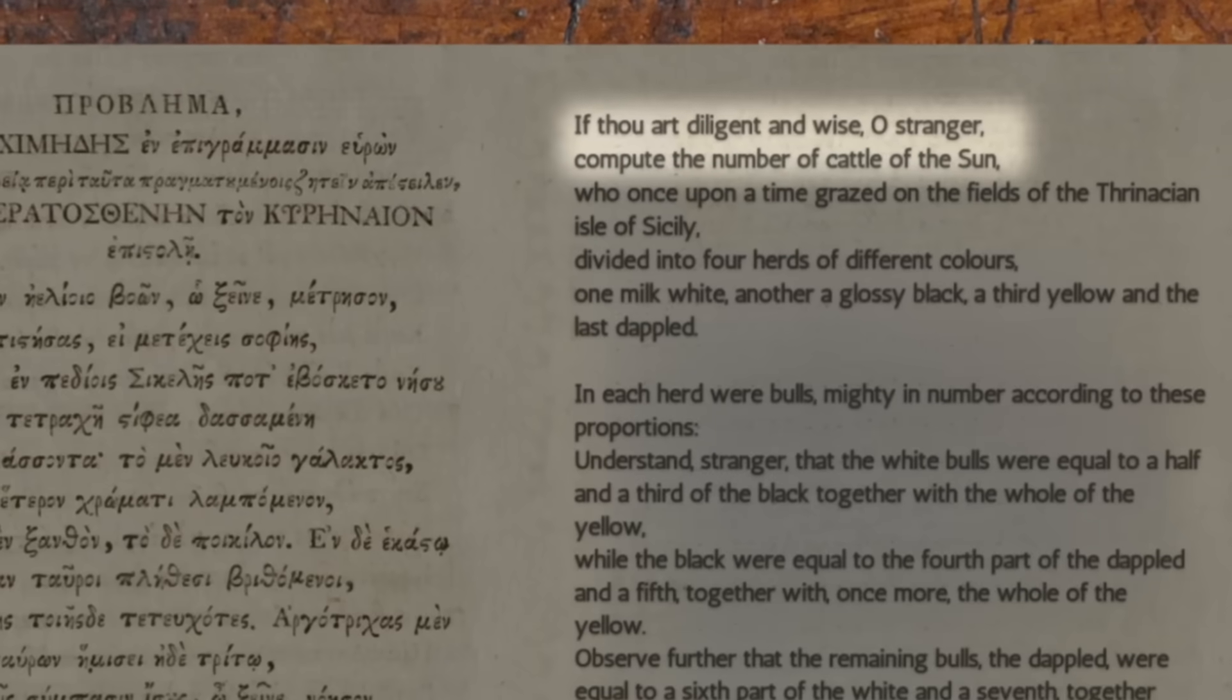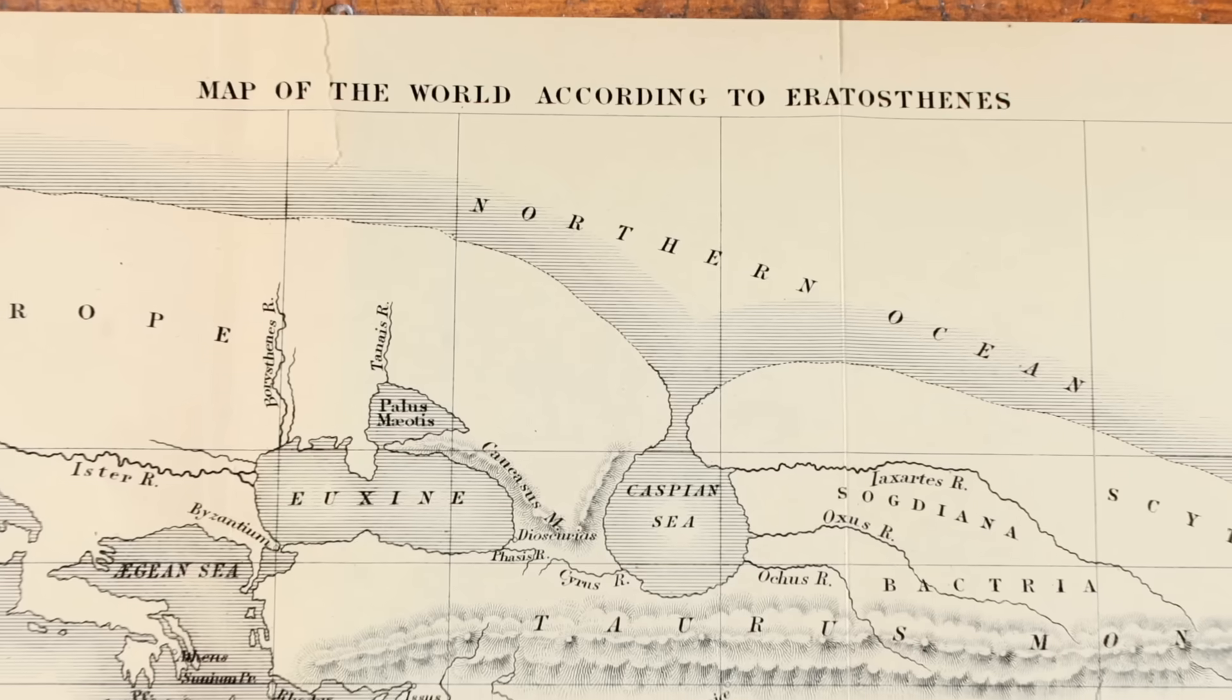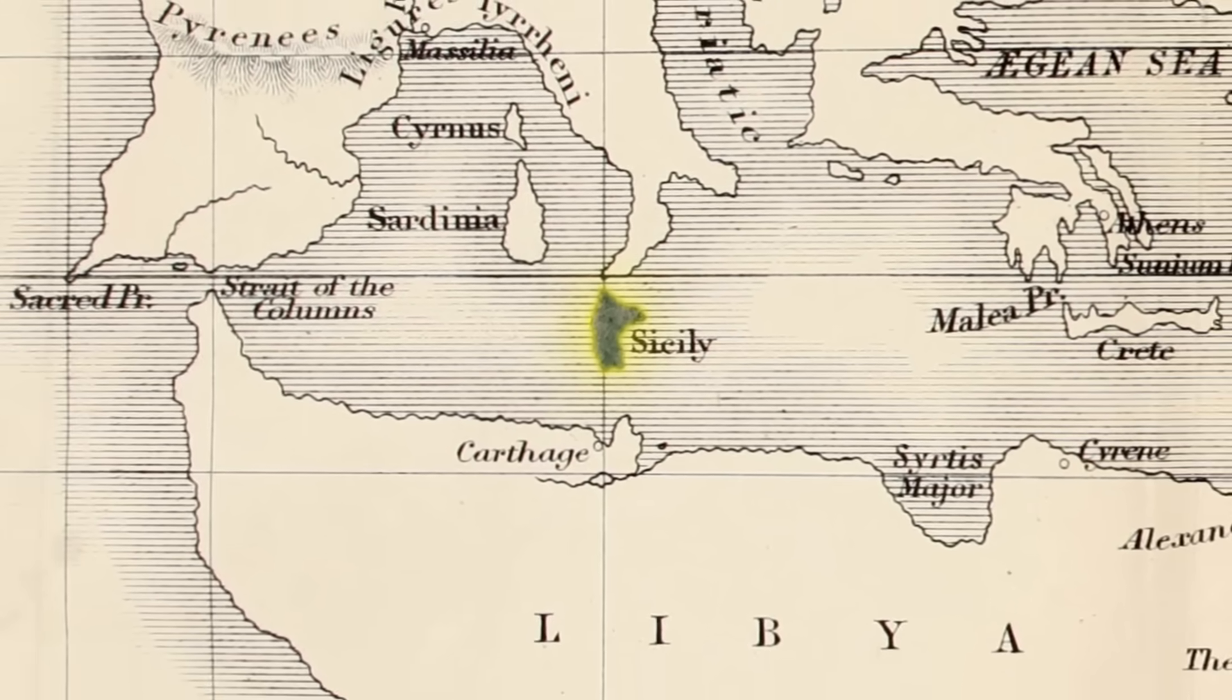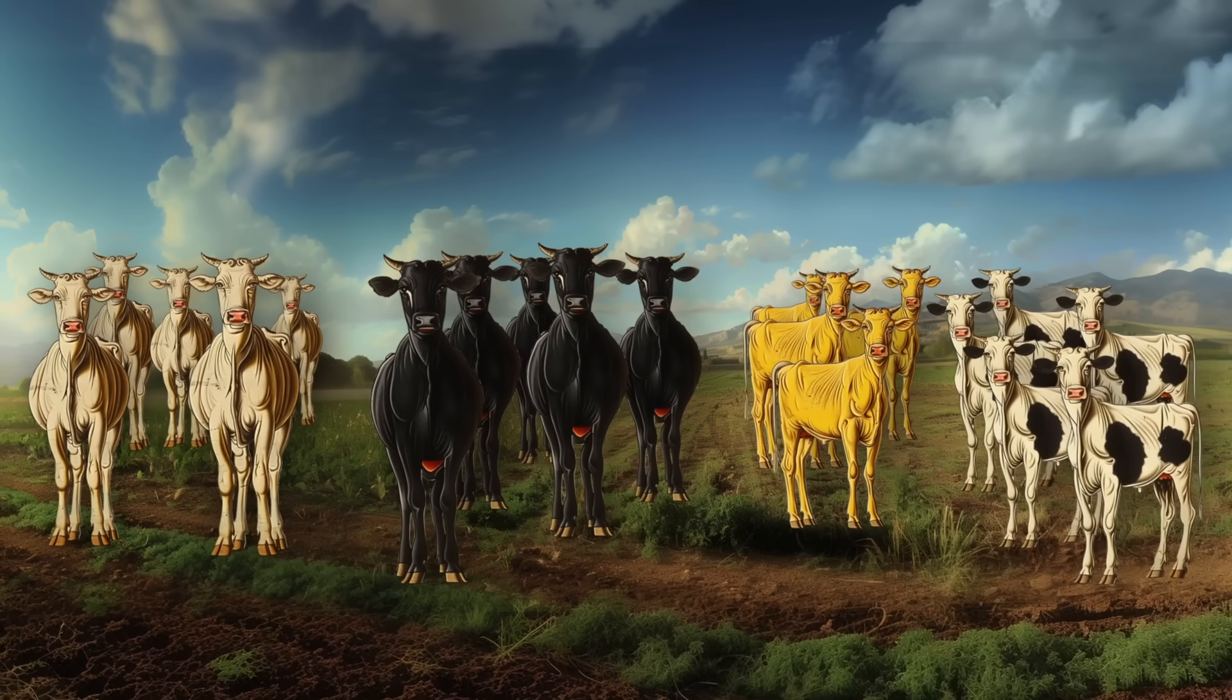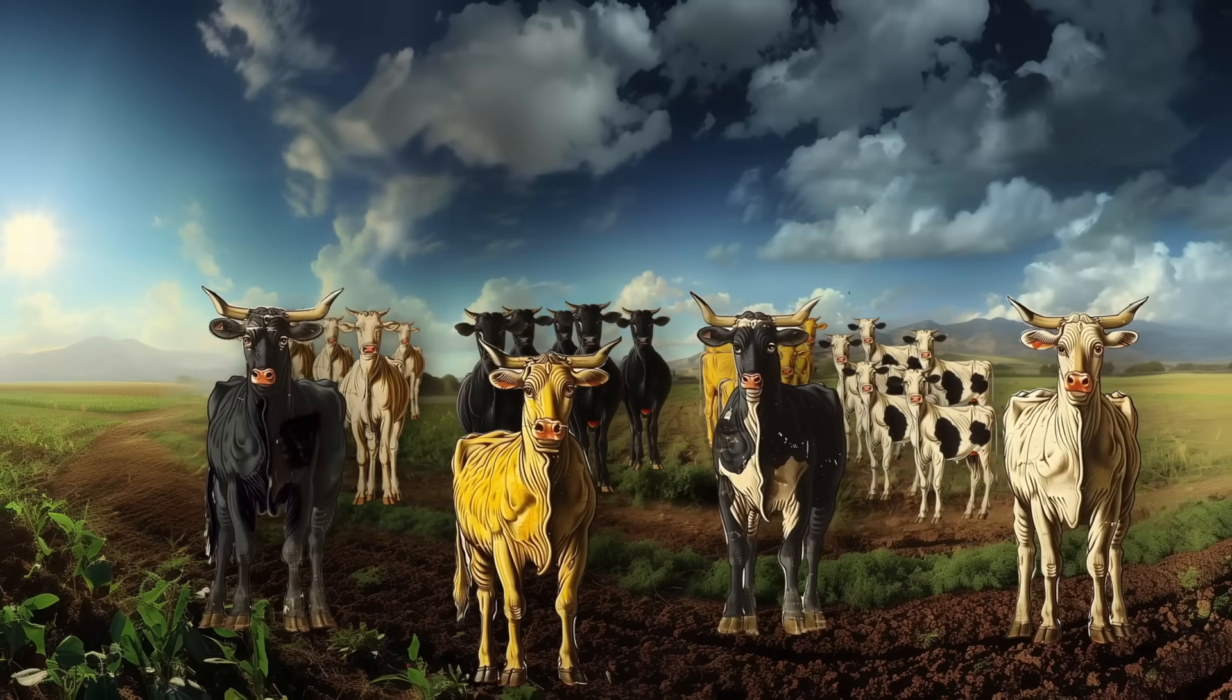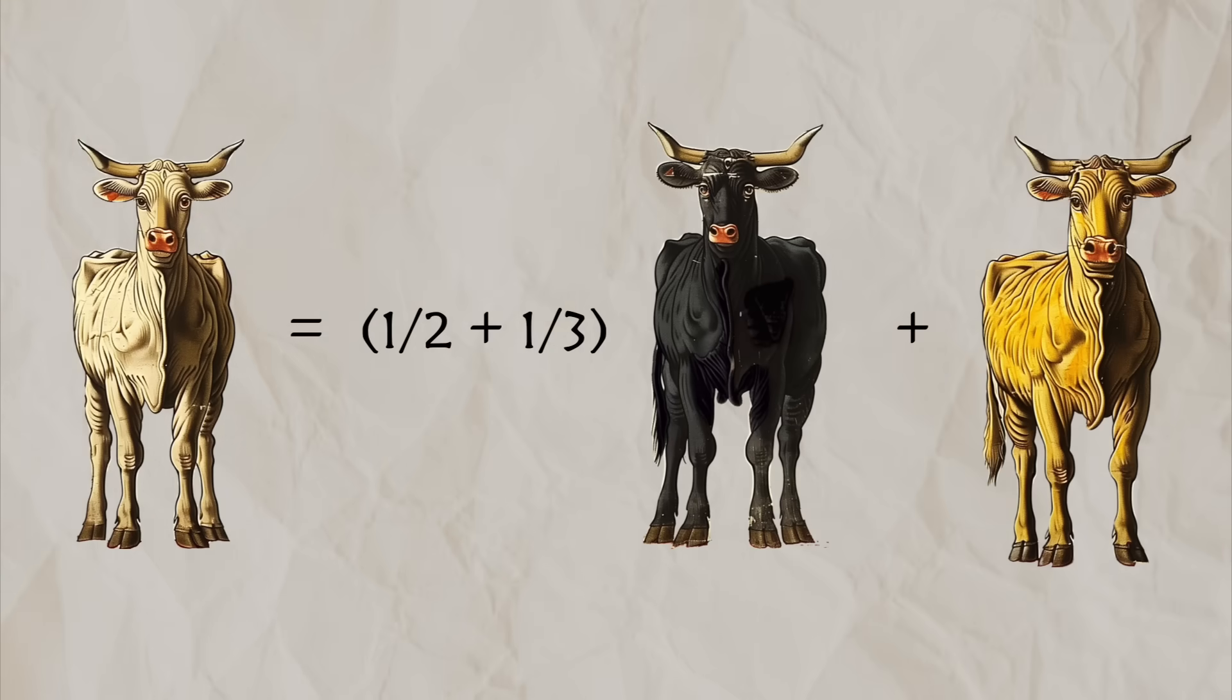It starts like this: If thou art diligent and wise, O stranger, compute the number of cattle of the sun, who once upon a time grazed on the fields of the Thranation Isle of Sicily, divided into four herds of different colors - one milk white, another glossy black, a third yellow, and the last dappled. In each herd were bulls, mighty in number according to these proportions. Understand, stranger, that the white bulls were equal to a half and a third of the black, together with the whole of the yellow.